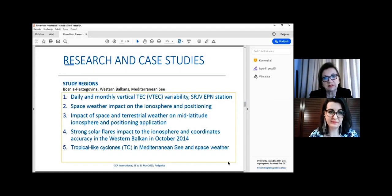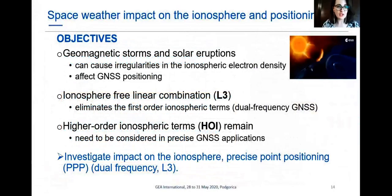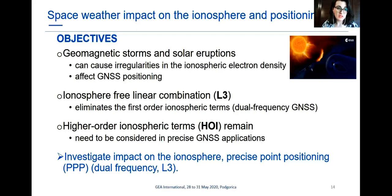Our research investigated the space weather impact on the ionosphere and positioning. Objectives were to study geomagnetic storms, solar eruptions, and solar flares, and their effects on the ionosphere. As they cause irregularities in ionospheric electron density, they also affect applications relying on GNSS, such as positioning. In this research, we studied dual-frequency GNSS positioning based on the ionosphere-free linear combination L3. This combination eliminates the first-order ionospheric terms, but higher-order ionospheric terms remain and need to be accounted for in precise GNSS applications.